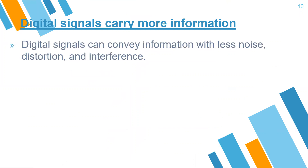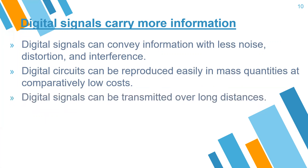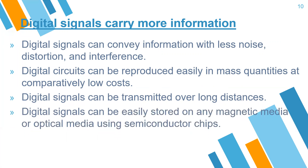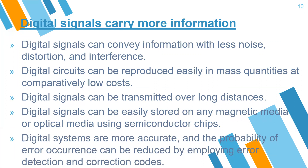Digital signals can carry more information. Digital signals can convey information with less noise, distortion, and interference. Digital circuits can be reproduced easily in mass quantities at comparatively low costs. Digital signals can be transmitted over long distances and can be stored in any magnetic or optical media using semiconductor chips. Digital systems are more accurate, and the probability of error occurrence can be reduced by employing error detection and correction codes.